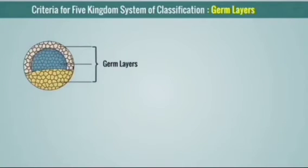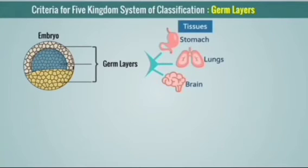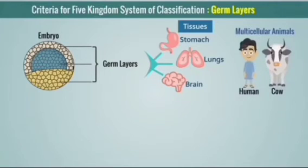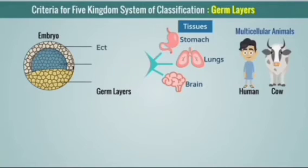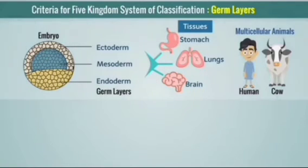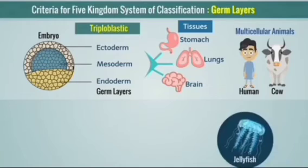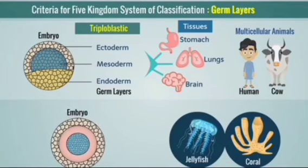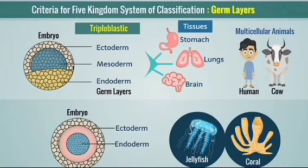During embryonic development, organisms form three germ layers. These three germ layers develop into specific organs in higher animals, such as stomach, lungs, and brain. In multicellular organisms the germ layers are of three types: ectoderm, endoderm, and mesoderm. Ectoderm is the outer layer, mesoderm is the middle layer, and endoderm is the inner layer. Animals that possess three layers are called triploblastic.